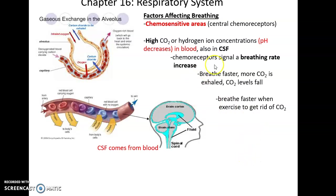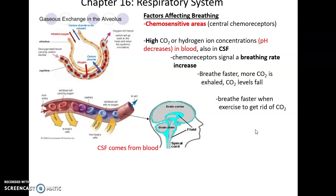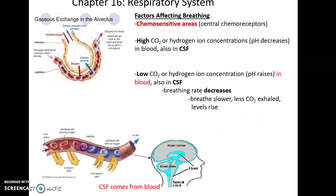When blood becomes more acidic, the chemoreceptors send a signal to the brain, which increases the breathing rate. By breathing faster, more carbon dioxide gets released into the exhaled air, so CO2 levels in the blood go down. When you have high levels of carbon dioxide or the blood becomes more acidic, you breathe faster, getting rid of extra CO2, lowering carbon dioxide levels, lowering hydrogen ion levels, and raising the pH.